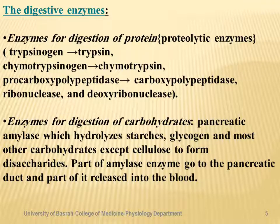The digestive enzymes of the pancreas include enzymes for digestion of protein, called proteolytic enzymes. Trypsinogen is the inactive form that is converted to the active form trypsin. There is also chymotrypsinogen, which is the inactive form converted to chymotrypsin, and procarboxypeptidase converted to carboxypeptidase. Additional enzymes include lipase, ribonuclease, and deoxyribonuclease. These enzymes are synthesized and released into the second part of the duodenum in inactive form.